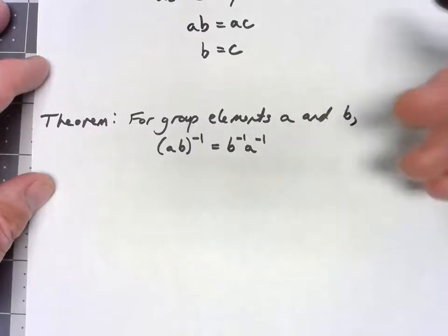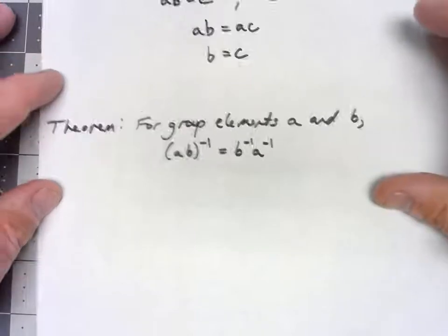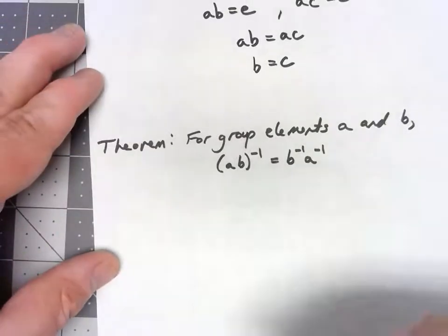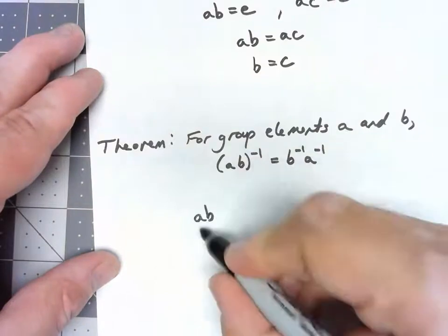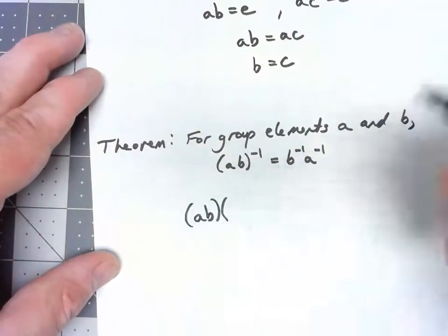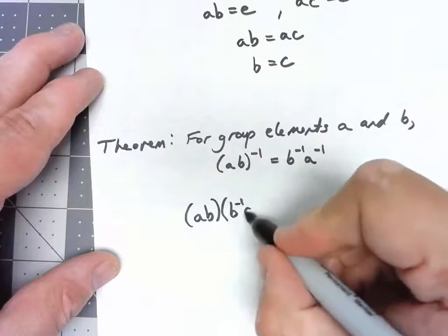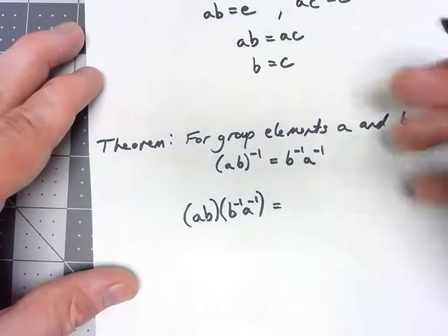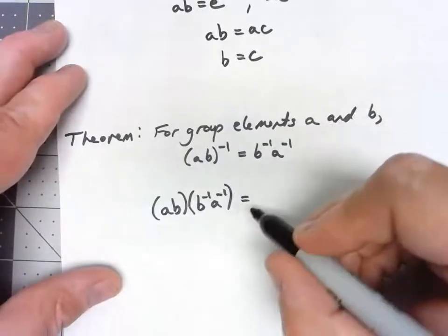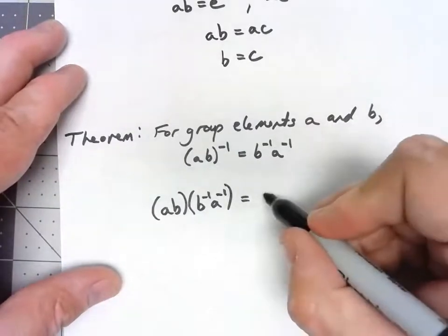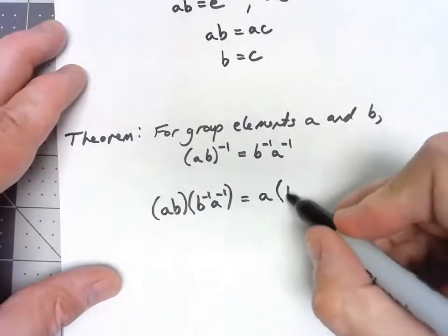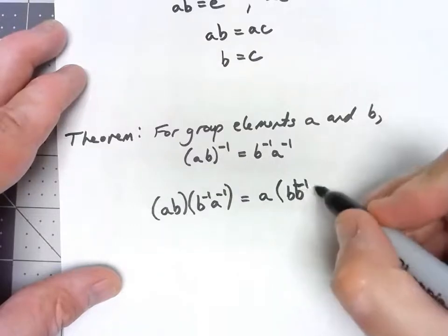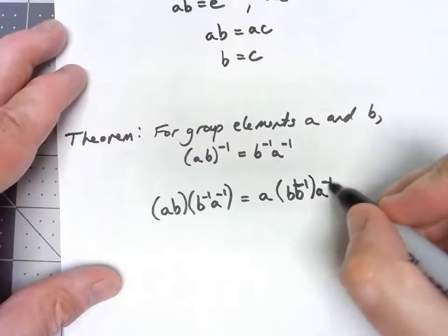To show this, all we need to show that it actually fits what an inverse is supposed to do. That is, if I take AB times B inverse A inverse, I can do some associativity stuff and say that's the same thing as A times BB inverse times A inverse.